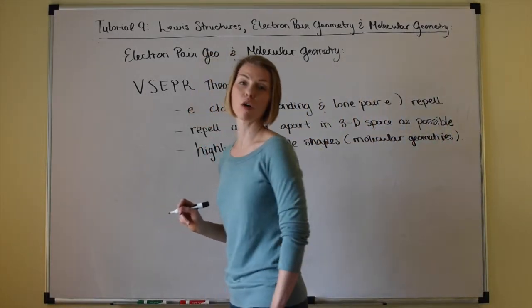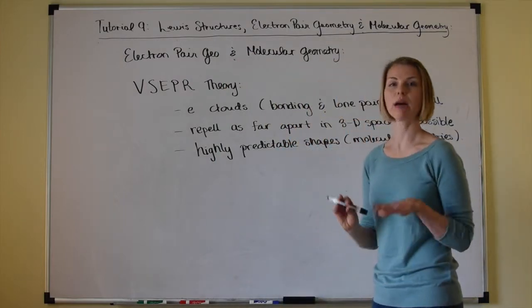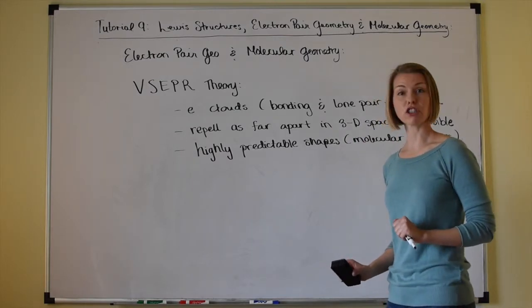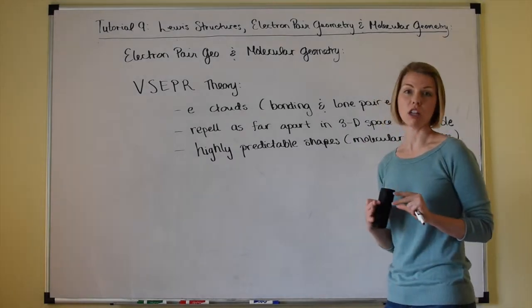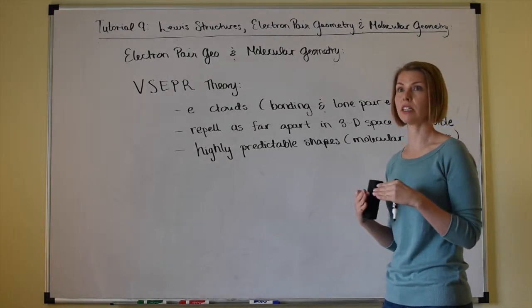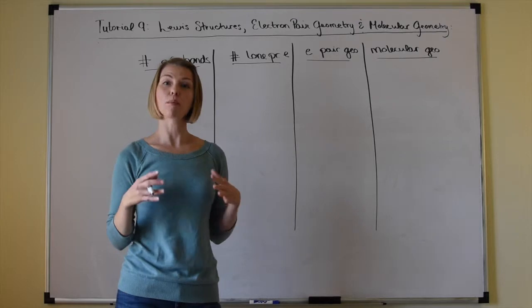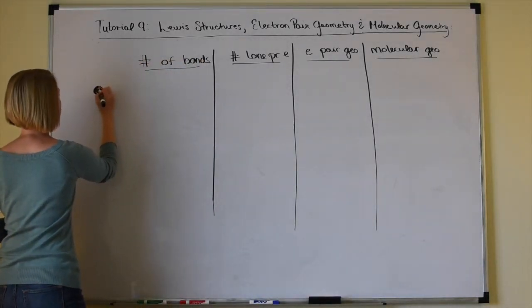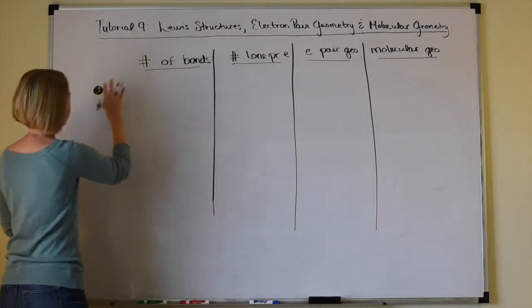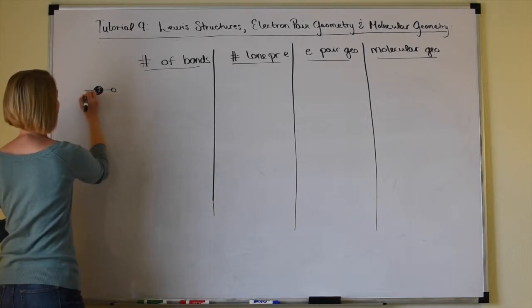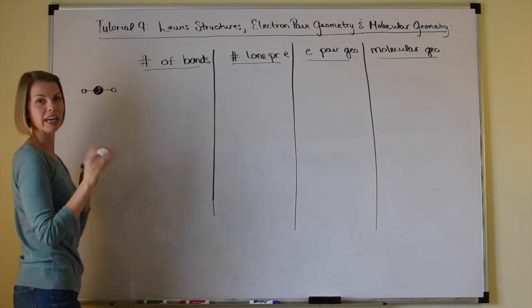I have a table on slide three covering molecular geometries for simple, small molecular compounds — staying in the realm of three to five atoms. Let's say we have a central atom bound to just two other atoms: two bonds and zero lone pairs on the central atom. That means there are two charge clouds — charge clouds include all bonding and lone pair electrons.